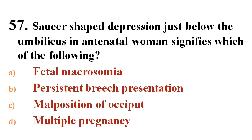Next question: Saucer-shaped depression just below the umbilicus in antenatal women signifies which of the following? Options A. Fetal pain, B. Persistent breech presentation, C. Malposition of occiput, D. Multiple pregnancy.